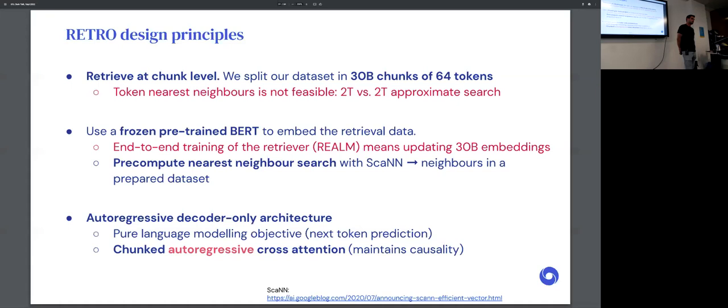To make this happen, there's a few key design principles we had to adhere to. First, previous work on retrieval often retrieves at the token level. When you do this at the 2 trillion database size, it's not possible to run a search at that size. Instead, what we have to do is chunk the dataset. We split up the training documents into roughly 64 token chunks, and this gives us about 30 billion chunks. It turns out that doing approximate retrieval at 30 billion scale is quite doable. In fact, it's surprisingly fast with modern libraries. It takes about 10 or 15 milliseconds to do a lookup. The second design principle is we use a frozen retriever model. This is because end-to-end training means you have to update your whole database of 30 billion embeddings repeatedly, and doing this is just too expensive compute-wise.